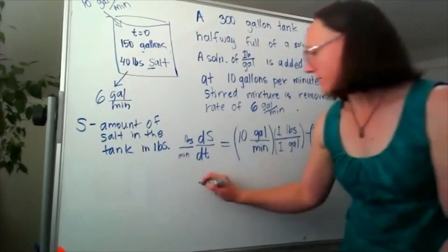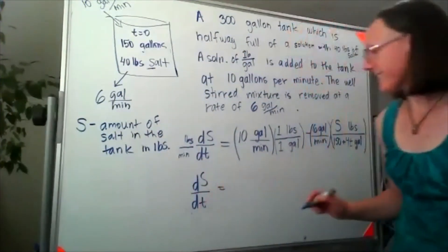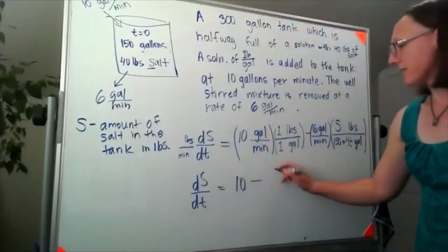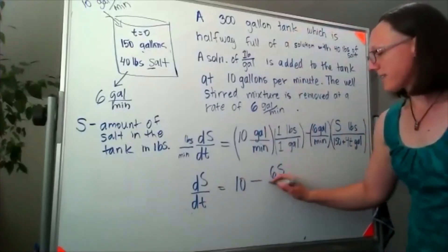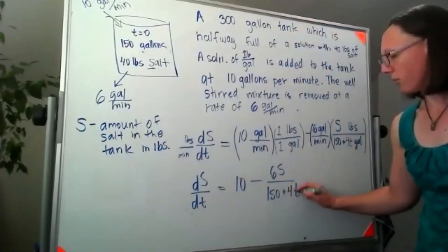Ditching our units, I'm now looking at something of the form dS/dt is equal to 10 minus 6S over 150 plus 4t.